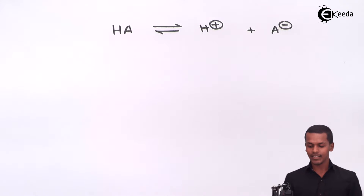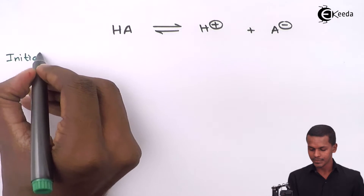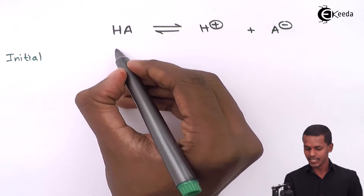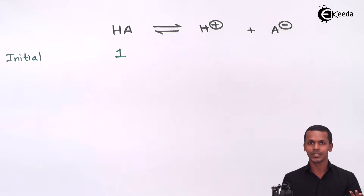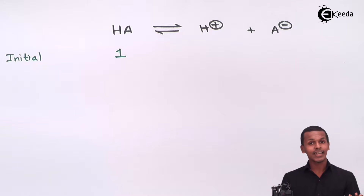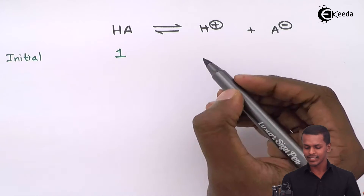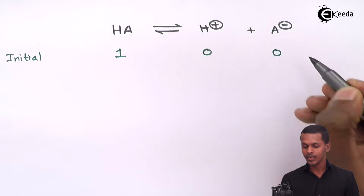Initially, before undergoing dissociation, the initial moles of HA is one mole, dissolved in a particular volume — suppose 1 dm³. So we start with 1 mole of HA introduced, and before dissociation we have 0 moles of H⁺ and 0 moles of A⁻.